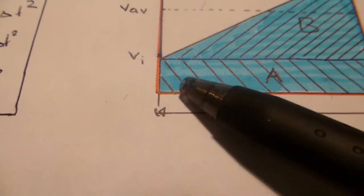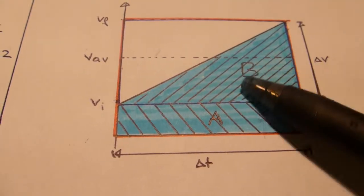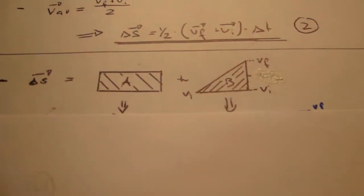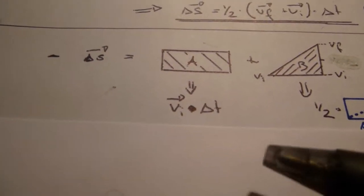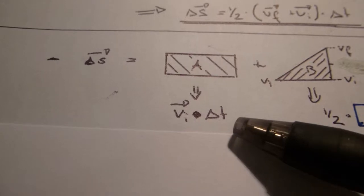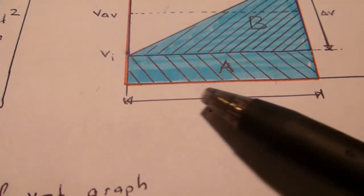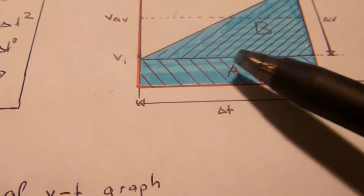So if we look at it, A over here, rectangular shape, plus the triangle. Now the rectangular shape is pretty easy, it's V initial times delta T. If you look here, delta T times V initial. So that's easy to calculate.